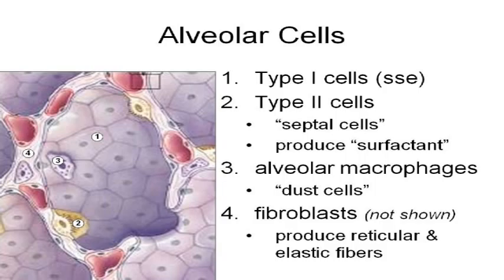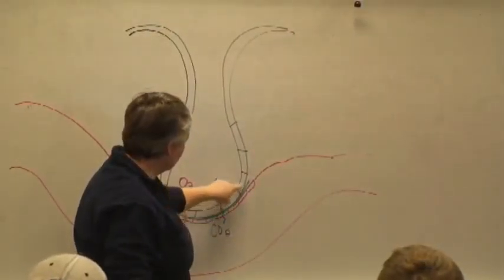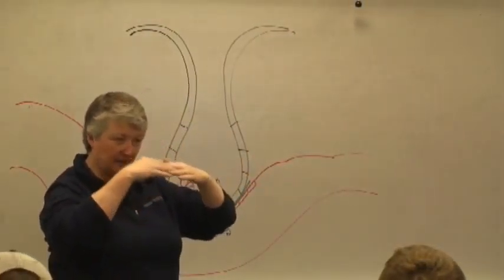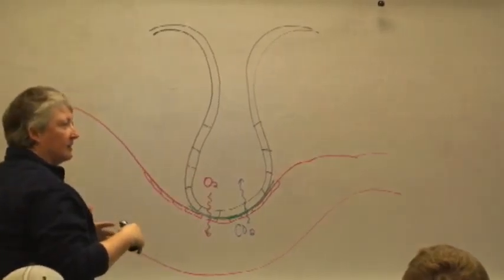So if you look at an alveolus, there are basically four types of cells. The main type of cell is what we call the type I cell or the simple squamous epithelial tissue. Just simple squamous epithelial tissue - flat, thin, plate-like cells.